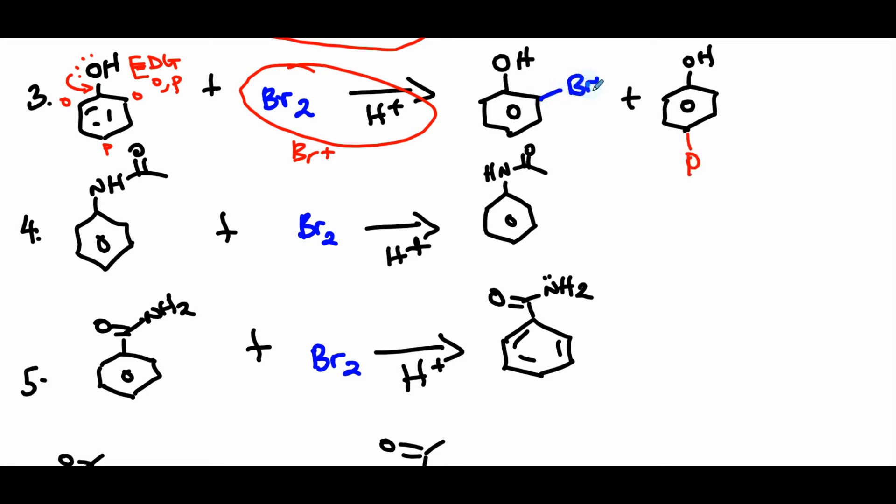It's hard to tell which is the major, we let the experiment decide because OH is a small group. Can't really tell if it causes much sterics with bromine.